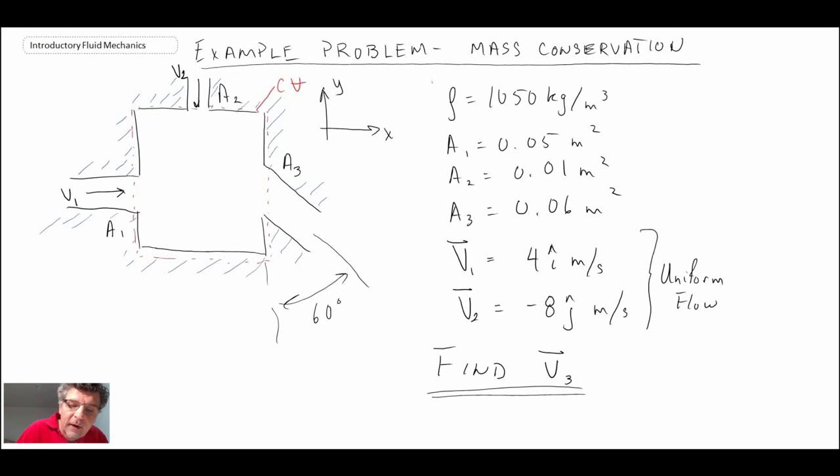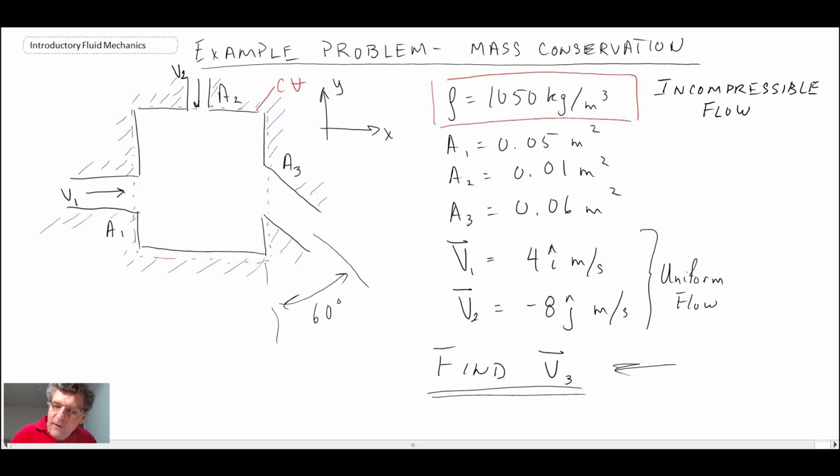So what we're going to do, we're going to go through applying the conservation of mass equation. Another thing to note here is the density has been specified, so that means that we have a case of incompressible flow. And it is steady, but if it's incompressible the time rate of change term drops out of the continuity equation anyways. But that is the problem, let's work through it and work on finding v3.